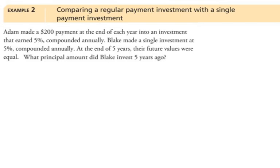This example is more complex than the last two only because we're involving two different methods of investing. We have Adam making a $200 payment at the end of each year into an investment that earned 5% compounded annually.